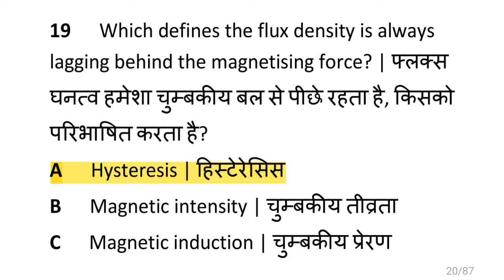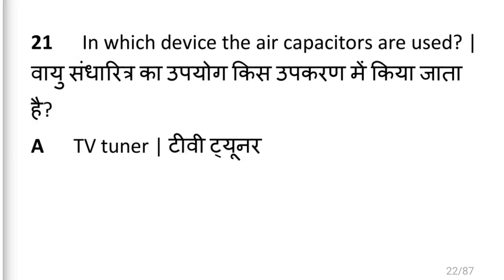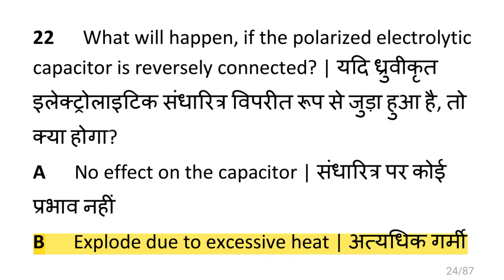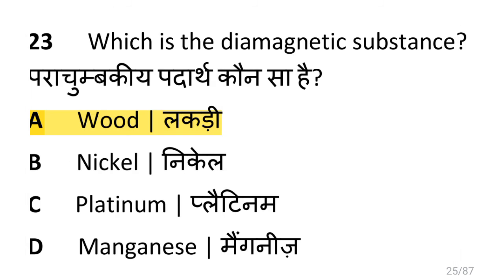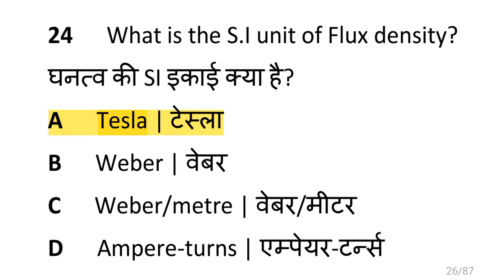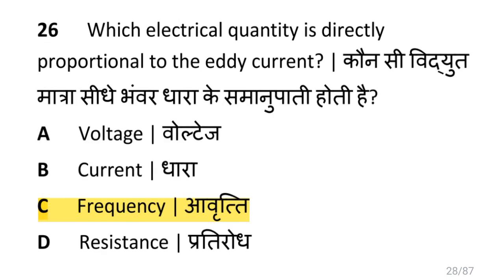How can you increase the pulling strength of an electromagnet? That is to increase the field intensity. Which defines that flux density is always lagging behind the magnetizing force? That is hysteresis. What is the effect on surrounding metal placed in a magnetic field? That is eddy currents. In which device are air capacitors used? That is a radio receiver. What will happen if a polarized electrolytic capacitor is reversely connected? It will explode due to excessive heat.